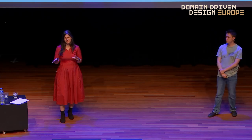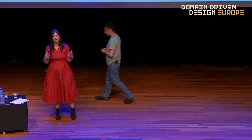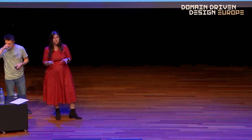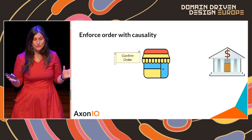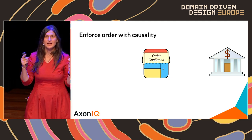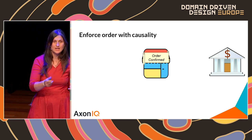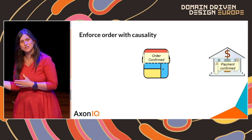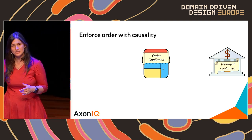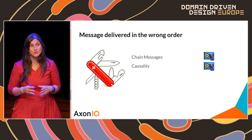Another similar design solution is causality: connecting operations through a cause-and-effect mechanism. The confirm-order command is handled by a component that publishes an order-confirmed event, and as a consequence of that event, a handler requests payment. It is therefore impossible for payment to be performed before the order is confirmed.